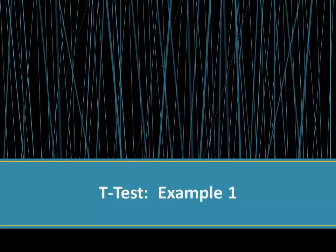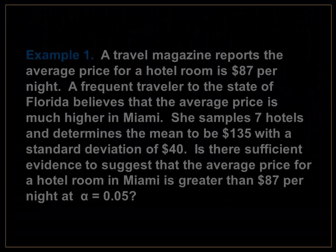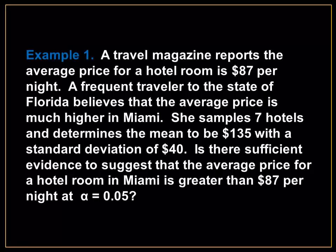The t-test for the mean. For example, a travel magazine reports the average price for a hotel room is $87 per night. A frequent traveler to the state of Florida believes that the average price is much higher in Miami. She sampled 7 hotels and determined the mean to be $135 with a standard deviation of $40.